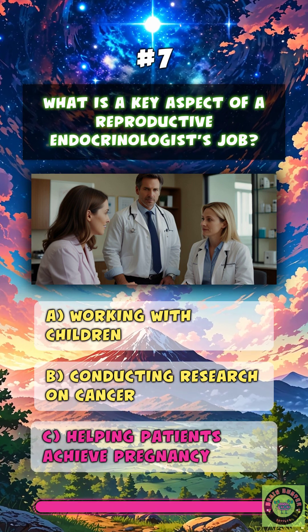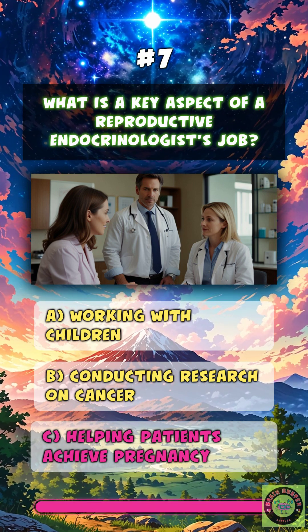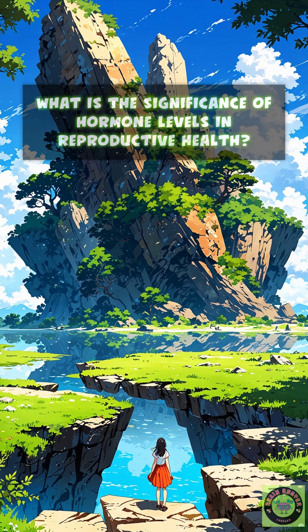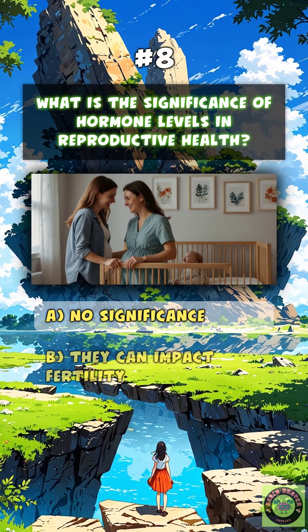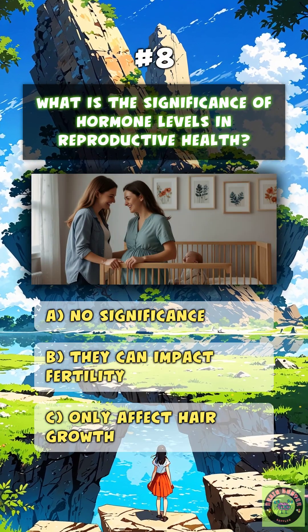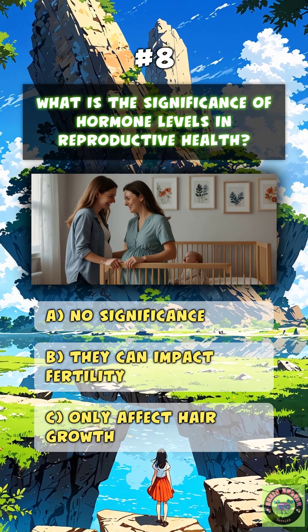What is a key aspect of a reproductive endocrinologist's job? C. Helping patients achieve pregnancy.